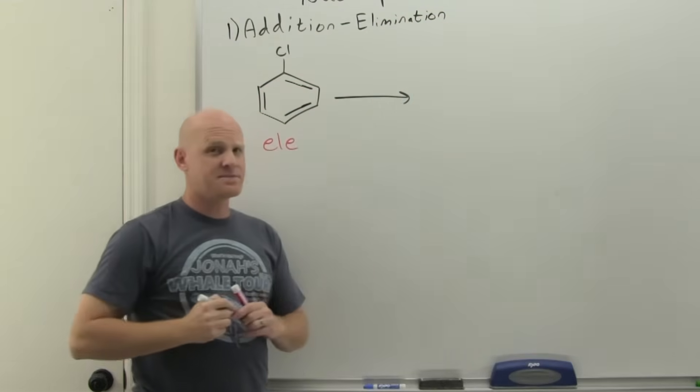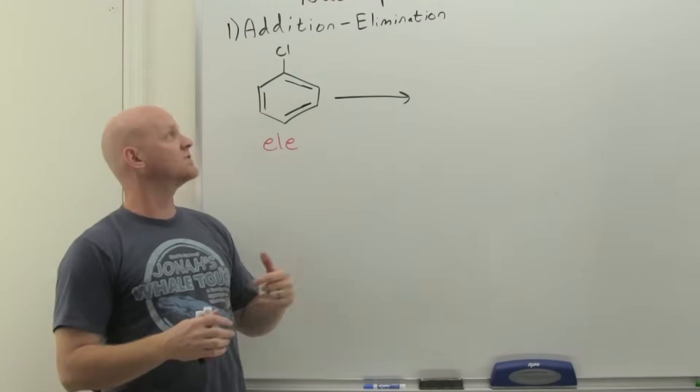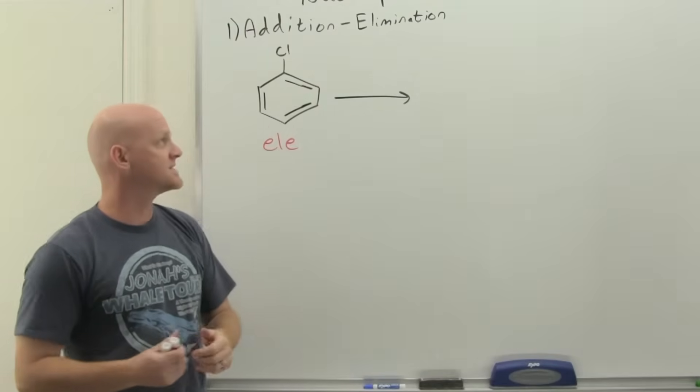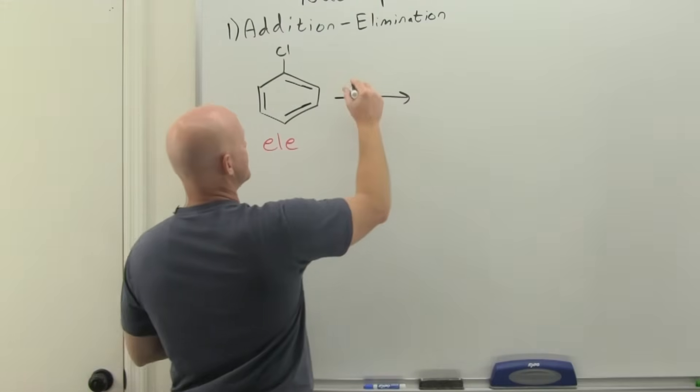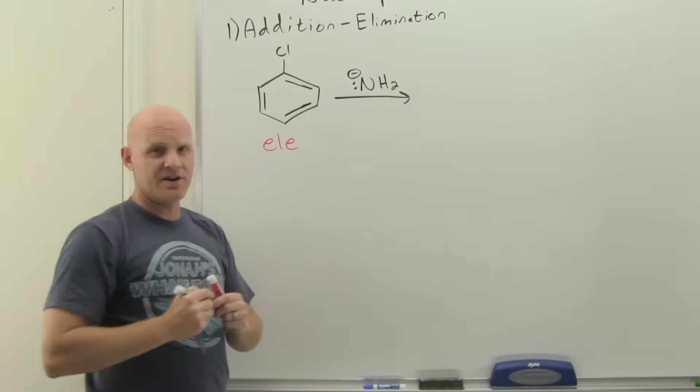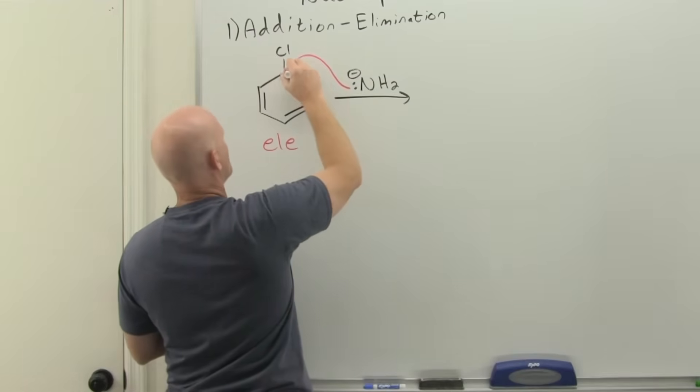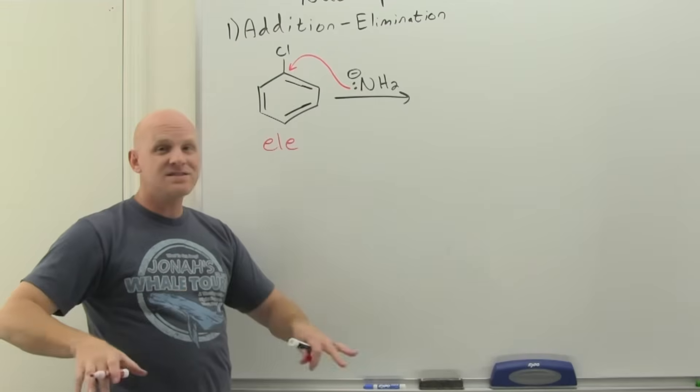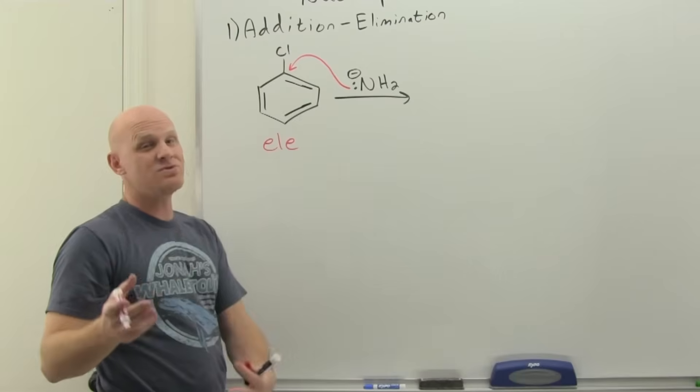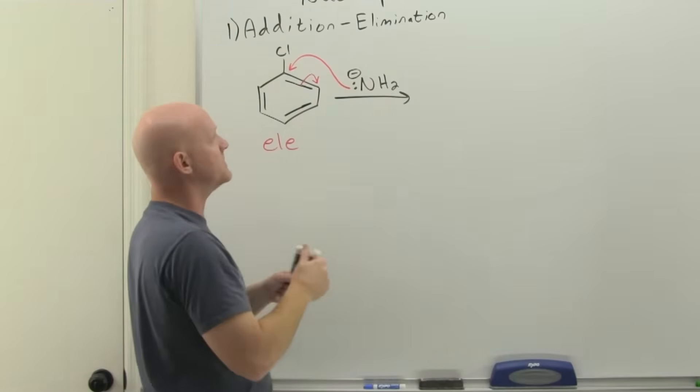There's two major mechanistic steps to this, and you might guess what they are. The first one's addition, and the second one's elimination. We'll find out that the second mechanism, one of the names it goes by is elimination-addition, and it just changes the order in which things happen. But we're going to have nucleophilic addition first, and in this case, I'm going to use NaNH2. The sodium's just a spectator here, it's the amide ion, that's going to be our strong nucleophile. First thing you're going to do is come and do nucleophilic attack where the leaving group is. But this is not SN2, it's not backside attack. We can't kick off the chlorine in the same step, because we can't even get access to the backside. It's going to push these electrons out onto this carbon, forming a carbanion.